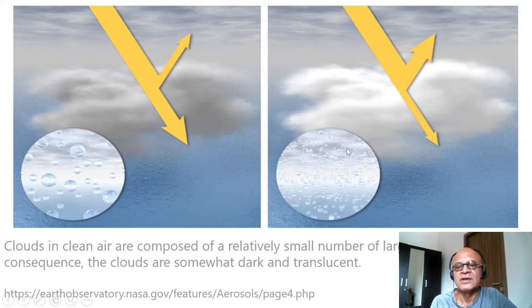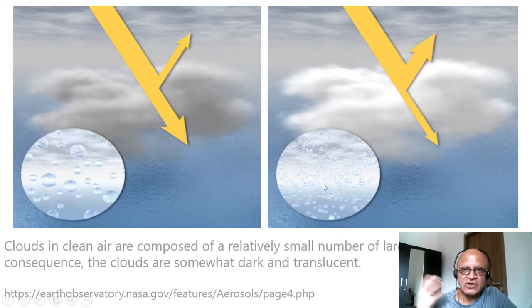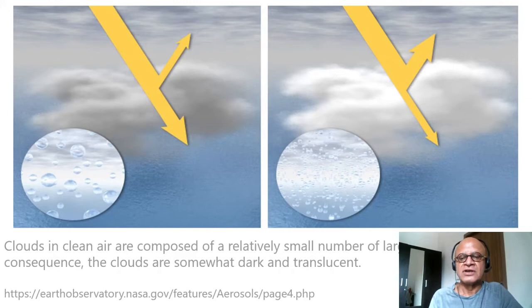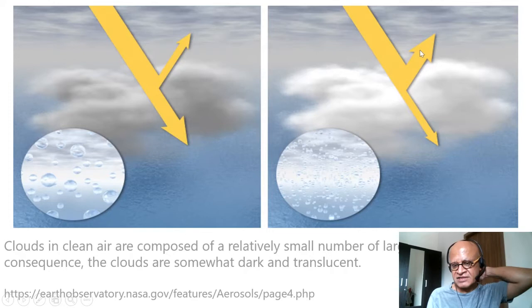Whereas when you have dirty air full of aerosols, pollution, dust, and maybe lots of sea salt, which is a natural aerosol that's generated from the ocean several billion tons every year, you can see the droplet sizes here are smaller and the clouds are brighter. The incoming solar radiation is allowed to go through, but a lot of it is reflected and scattered. That's the idea of doing that.